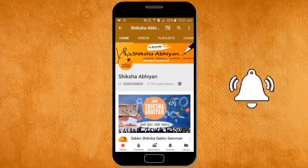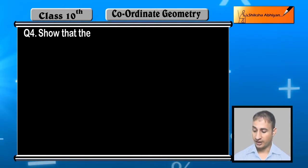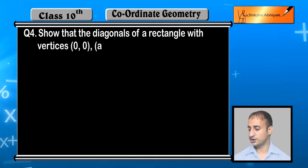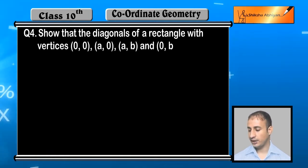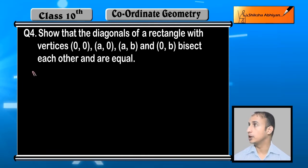Now students, see the next question: Show that the diagonals of a rectangle with vertices (0,0), (a,0), (a,b), and (0,b) bisect each other and are equal.